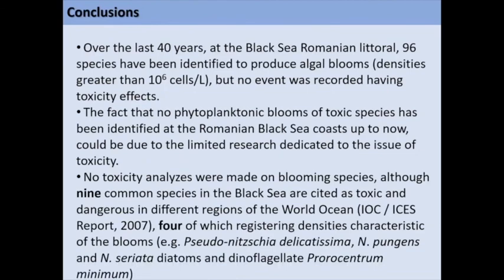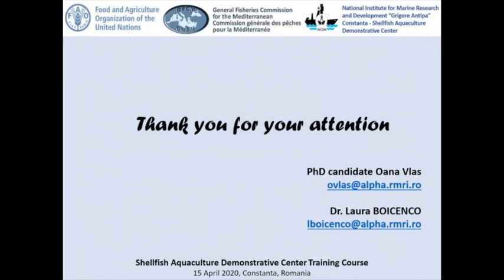In conclusion, over the last 40 years at the Black Sea Romanian littoral, 96 species have been identified to produce algal blooms, but no event was recorded with toxicity effects. The fact that no phytoplanktonic blooms of toxic species have been identified at the Romanian Black Sea coast could be due to the limited research dedicated to toxicity. No toxicity analyses were made on blooming species, although nine common species in the Black Sea are cited as toxic and dangerous in different regions worldwide, four of which register densities characteristic of blooms — Pseudo-nitzschia delicatissima, Nitzschia pungens, Nitzschia seriata, and the dinoflagellate Procentrum. If you have any questions or comments, you can write me or my colleague Laura, who taught me all about phytoplankton. Thank you for your attention.